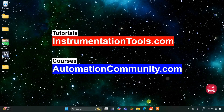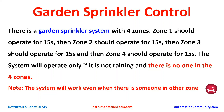Hello everyone, welcome to Automation Community. Today in this video we are going to discuss an example about a garden sprinkler. Let's look at the example first: garden sprinkler control — there is a garden sprinkler system with four zones.